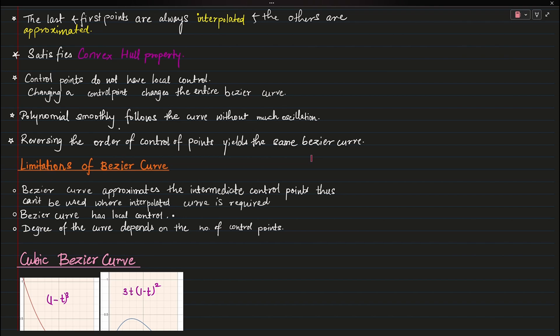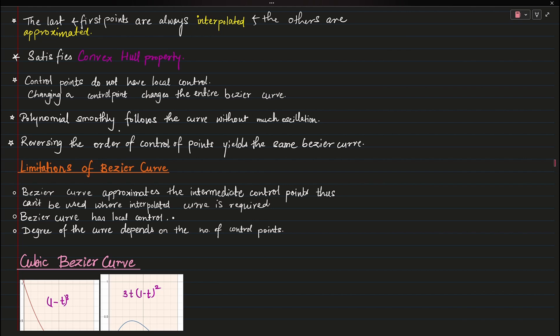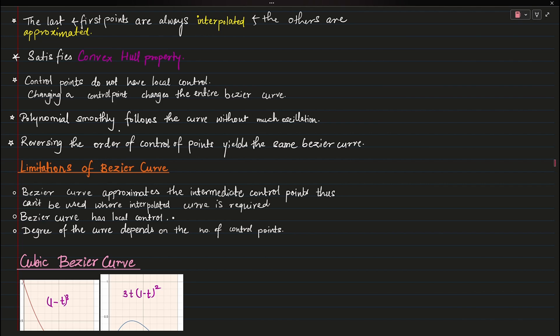Reversing the order of control points will yield the same Bezier curve. Limitations of Bezier curve: it approximates the intermediate control points, giving neither full interpolation nor full extrapolation. It has no local control — if you shift even one control point slightly, the entire curve needs to be redrawn. Also, the degree depends on the number of points, which is problematic: 10 points require a degree-9 polynomial, and 100 points require a degree-99 polynomial.